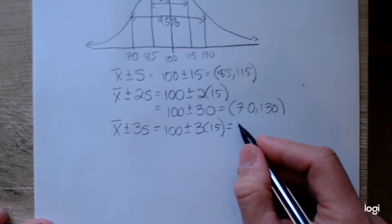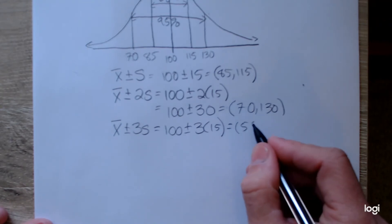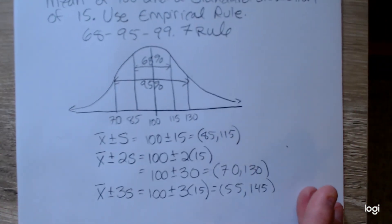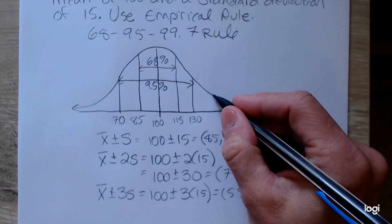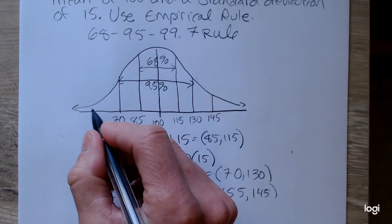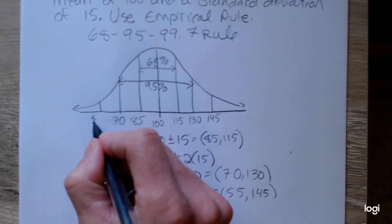So that's going to go down from 55 up to 145. So on my bell curve, this value would be 145, and then we would go down to 55.